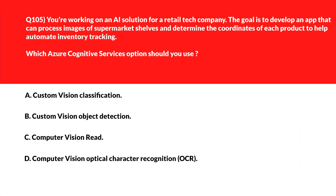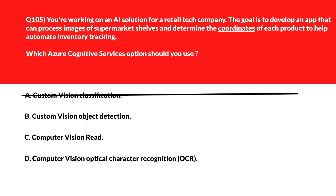Let's look at this question testing your concepts on Azure Cognitive Services. We need to determine the coordinates of each product to help automate inventory tracking. Option A says Custom Vision Classification — this assigns a label to the whole image without providing location coordinates, hence incorrect. Option B says Custom Vision Object Detection — this is designed to identify objects in an image and pinpoint their position using coordinates, so let's keep this.